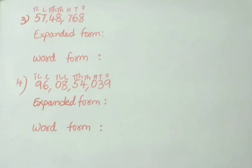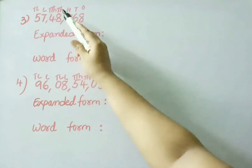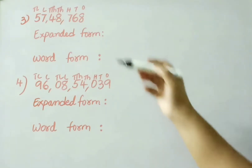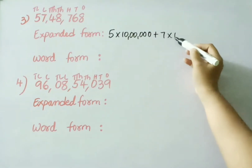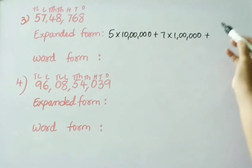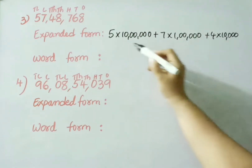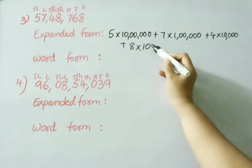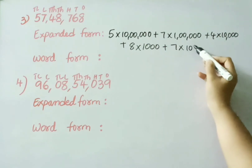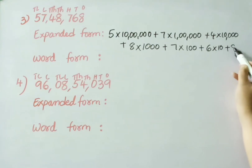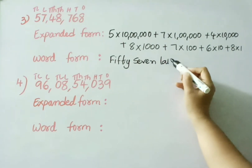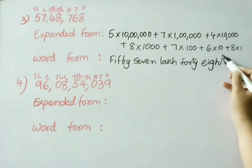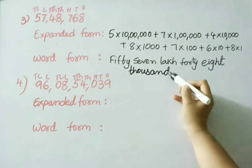Now let us see the remaining numbers. See the third one: fifty-seven lakh forty-eight thousand seven hundred sixty-eight. Write in expanded form: ten lakhs place: 5, so 5 × 10 lakhs; one lakh place: 7, so 7 × 1 lakh; ten thousands: 4, so 4 × 10,000; thousands: 8, so 8 × 1,000; hundreds: 7, so 7 × 100; tens: 6, so 6 × 10; ones: 8, so 8 × 1. Word form: fifty-seven lakhs, forty-eight thousand, seven hundred sixty-eight.